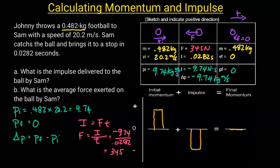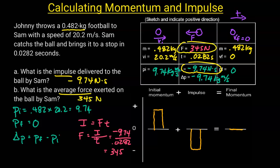Now that we have this chart filled out, we can go back and answer the question. The question is: what is the impulse delivered to the ball by Sam? That impulse will be negative 9.74 Newton-seconds. And what's the average force? That answer is 345 Newtons — the force exerted on the ball by Sam.